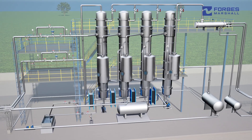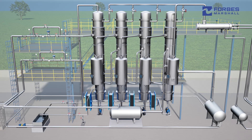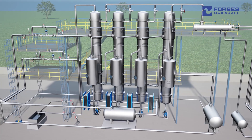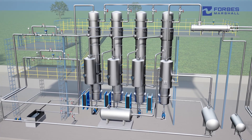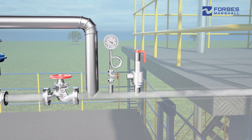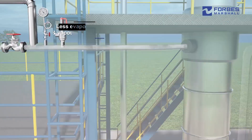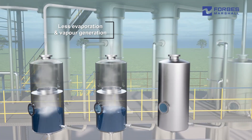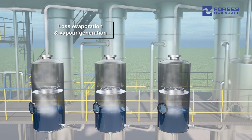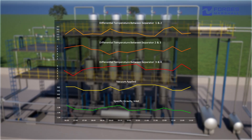Lower performance against design parameters can be attributed to conventional control philosophies, which fail to account for dynamic variations in actual conditions. For example, when steam supply pressure to the first effect fluctuates, it reduces vapor production, leading to less evaporation and vapor generation in subsequent effects, ultimately reducing overall evaporation.